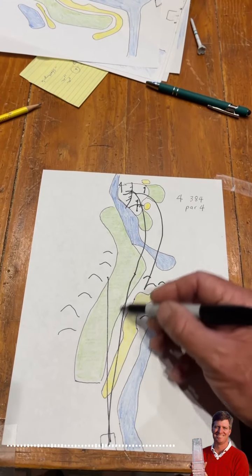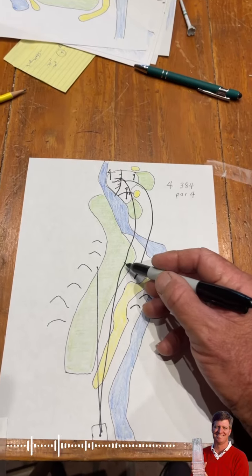All about the tee shot. Got to get it down the right side. Go where you don't want to go - down that right side.